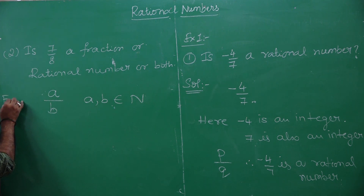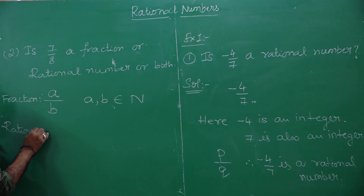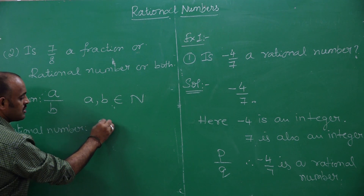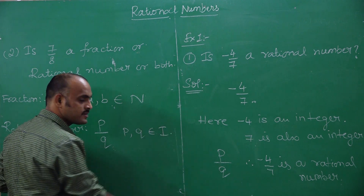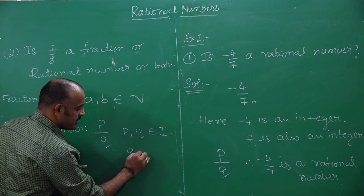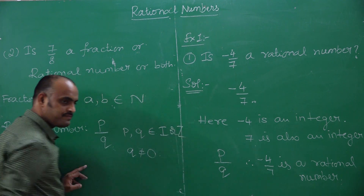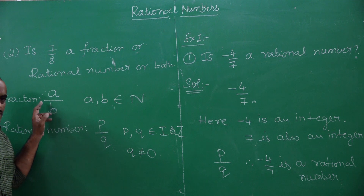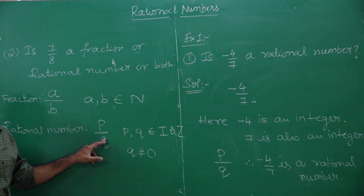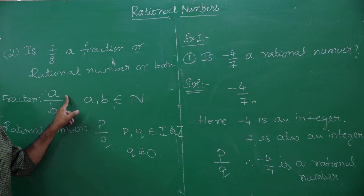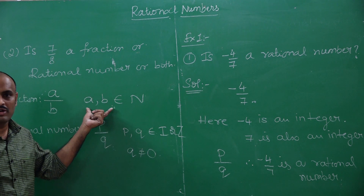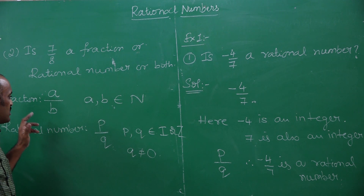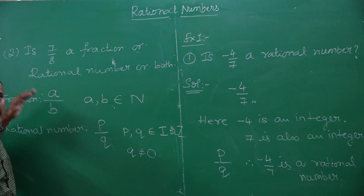When it comes to rational numbers, it is expressed in the form of p by q, where p and q belong to integers and q is not equal to 0. So what is the difference? All the fractions are rational numbers, but all the rational numbers are not fractions. The reason is that p and q are integers, and integers can be negative — but fractions cannot be negative.